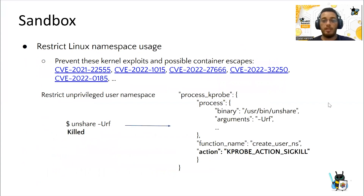Tetragram can also track access to Linux namespaces. The user namespace allows users to create their own namespace and gain capabilities to access some kernel features. Attackers often take advantage of this to perform kernel exploits, privilege escalation, or container escapes, as shown in this list of CVEs. Tetragram is able to restrict creation of unprivileged user namespaces and will kill the offending process, as shown in this demo.